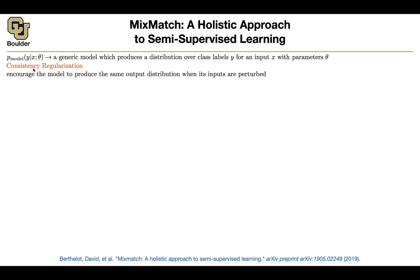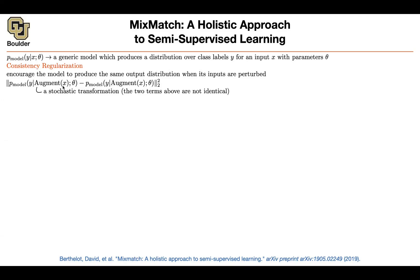A big class of solutions to semi-supervised learning is consistency regularization, where you are encouraging your model to produce the same output distribution even when the inputs are perturbed. You have an augmentation over your input data — perhaps rotate them, translate them, shift them, add noise to them. Consistency says that I want the predictions of my model under different augmentation strategies to be the same, to be consistent.